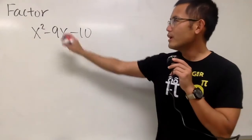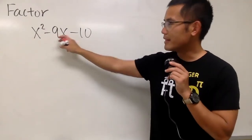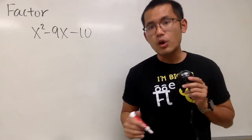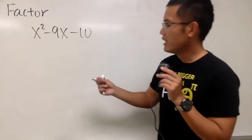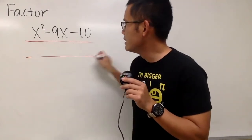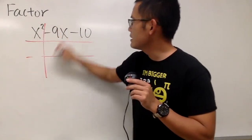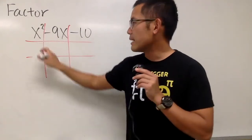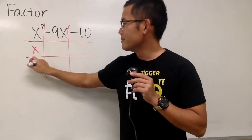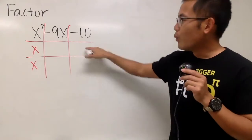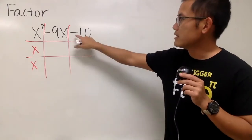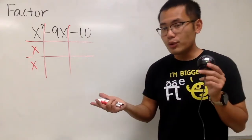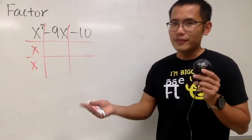Here we are going to factor x squared minus 9x minus 10. It has three terms, so let's try it with the tic-tac-toe method. What times what gives us x squared? Yes, x times x. Now, what times what gives us negative 10? You have a few choices.